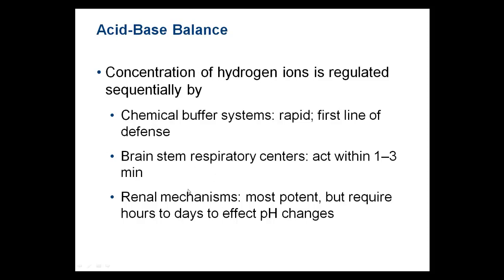The carbonate system was discussed when we covered the respiratory system. People not breathing well can develop respiratory acidosis, whereas those hyperventilating and expelling too much carbon dioxide can develop respiratory alkalosis — because the cause was respiration, not metabolism. The most potent but slowest regulator is the renal mechanism, which requires hours to start affecting pH changes.